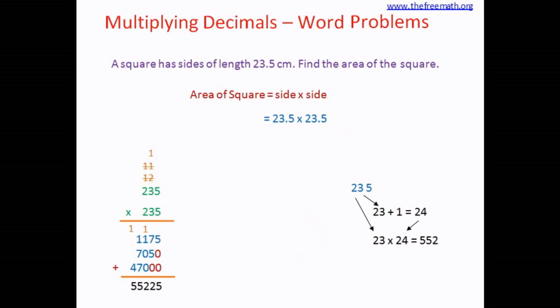You can see that multiplying 23 and 24 is a lot easier than multiplying 235 by 235. So we could have done a simpler calculation. And in the final step, what you do is you write 552 followed by 25.